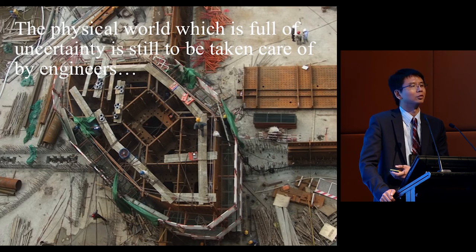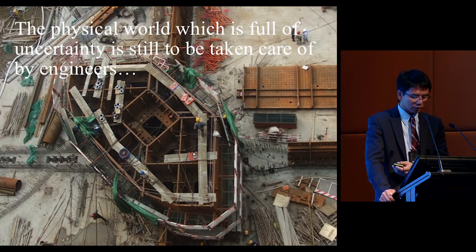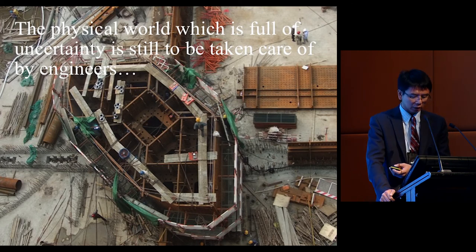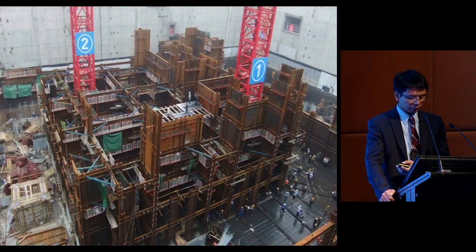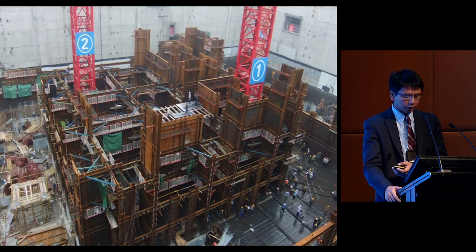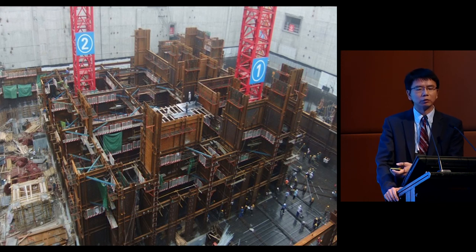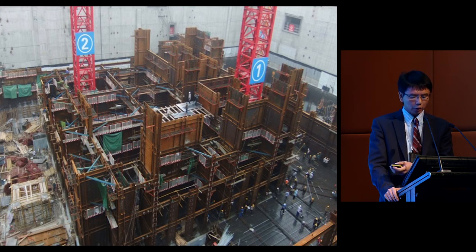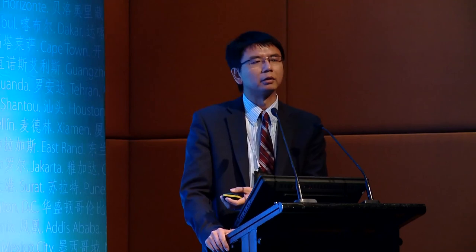Of course, the physical world is full of uncertainty that we have to be taken care of by engineers and builders anyway. This is the photo of the site last month. The megacolumn, you can see the size of the column and the scale of the workers. This is the central core with that steel plate built already, and then the rebars will come later before the concrete will be poured. Thank you very much.